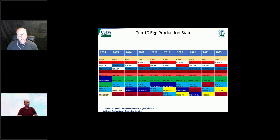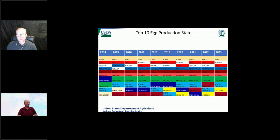The top 10 egg producing states since 2014 have differed compared to the prior head commodities. Just three states have been fairly consistent — Iowa, Texas, and Georgia have remained at first, fifth, and sixth in U.S. ranking over the last 10 years. A couple of states have shuffled around, and California has been removed from the top 10 after 2021.